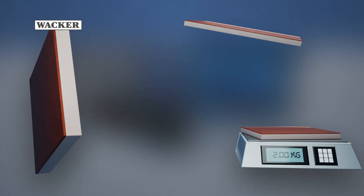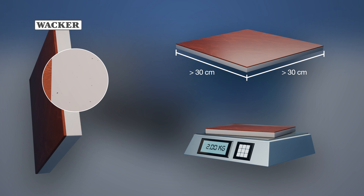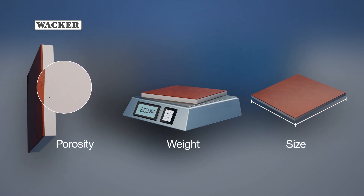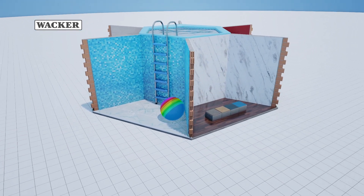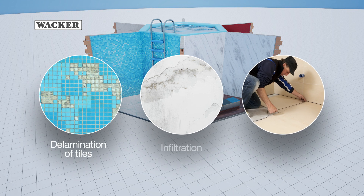Higher weight and greater dimensional stability pose even more challenges for the tile adhesive. Large, heavy, and dense tiles likewise place demands on the tile adhesive — they require advanced tile adhesives compatible with a wide variety of tile porosities and sizes. Unmodified tile adhesives are more likely to fail. Delamination of tiles, water infiltration, and unexpected repairs are some of the most common problems, which inconvenience owners too.